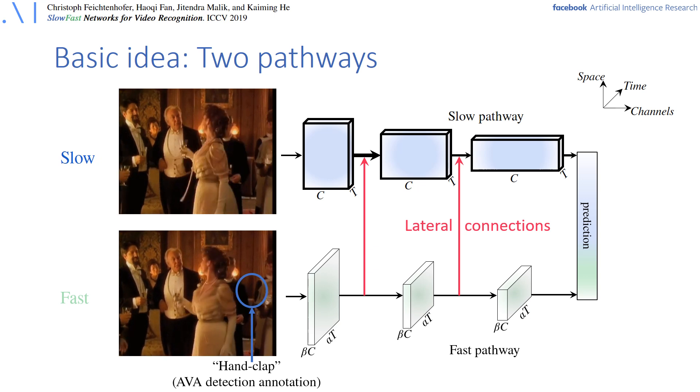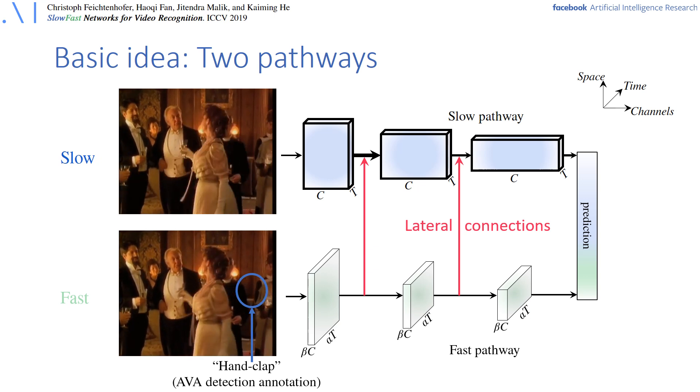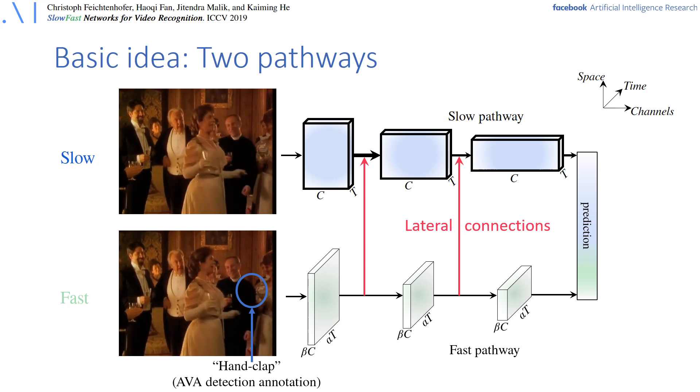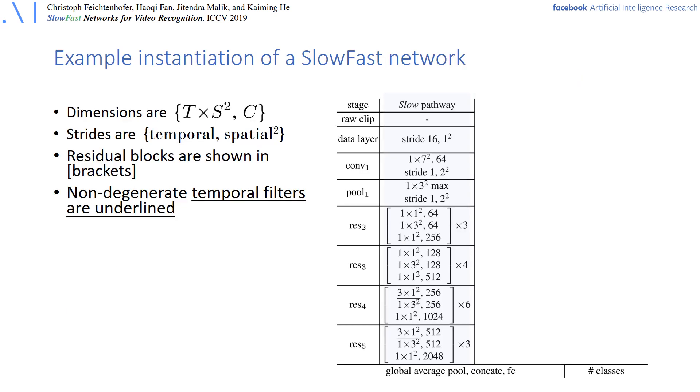For example, to recognize the hand clapping action of the person on the right here, high frame rate is really needed to get this action recognized. Next, the SlowFast network itself is represented now in detail in this table.